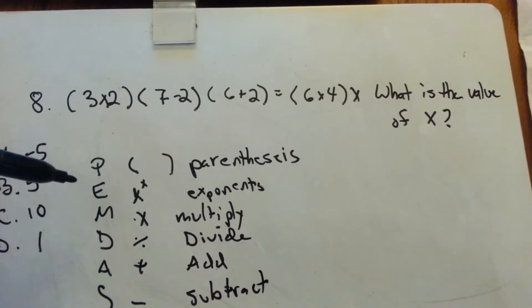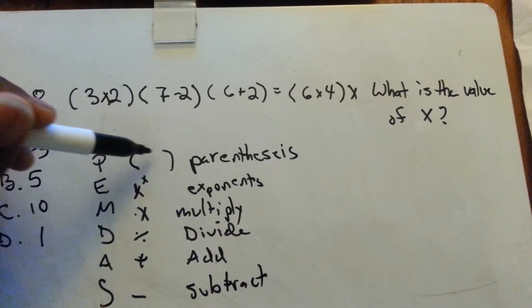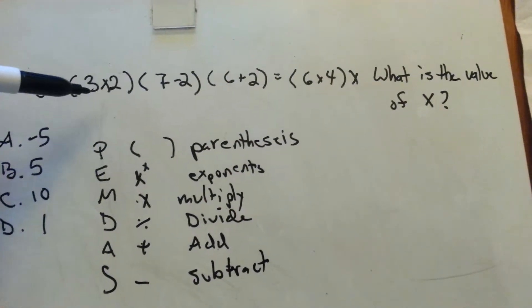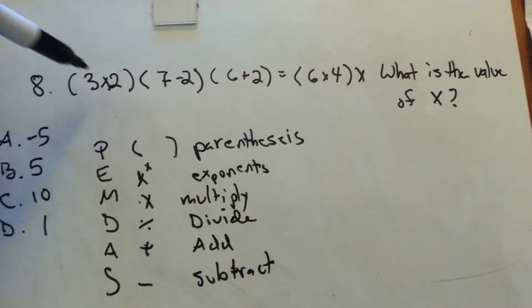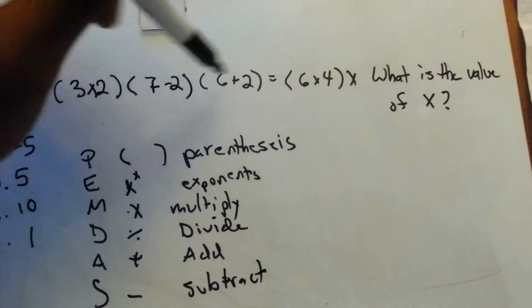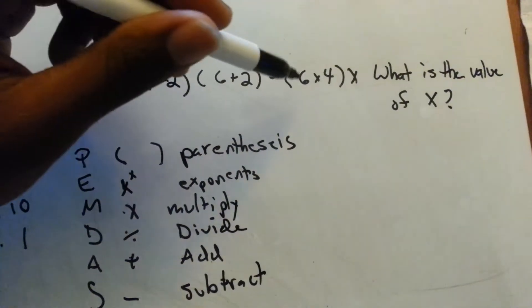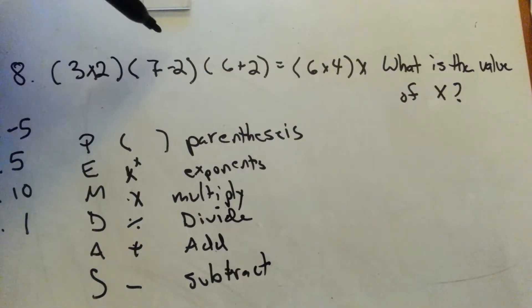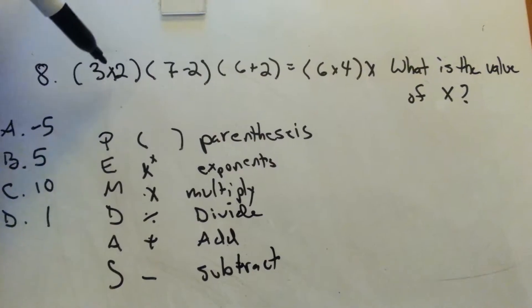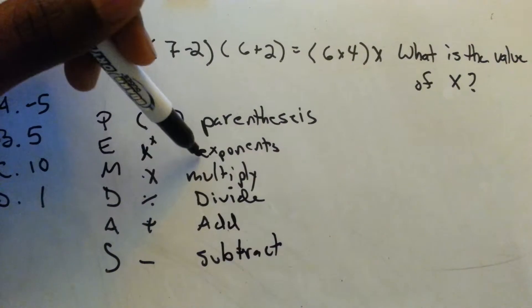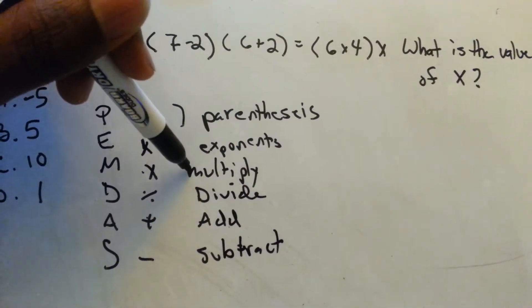So for this problem, the first thing we have is parentheses, and inside the parentheses we have different operations as well. We have some multiplication, some addition, subtraction, multiplication, and then we have multiplication outside of the parentheses. So the first thing you want to do is, see here, parentheses, no exponents, and then we have multiplication.